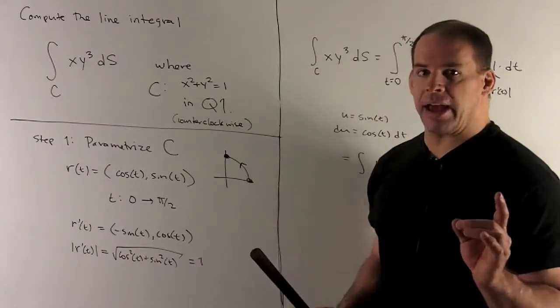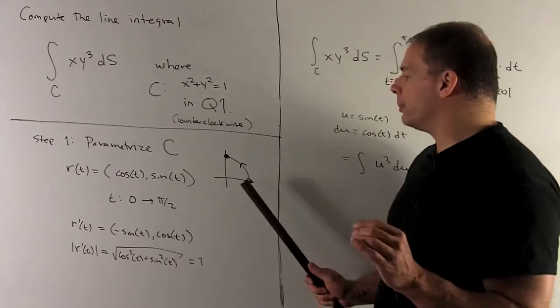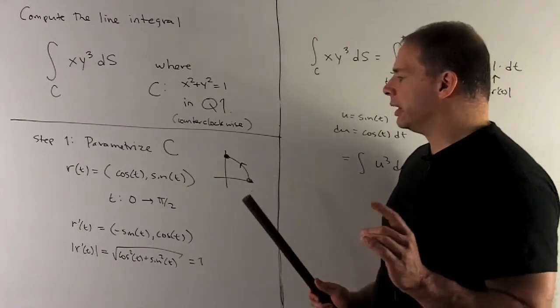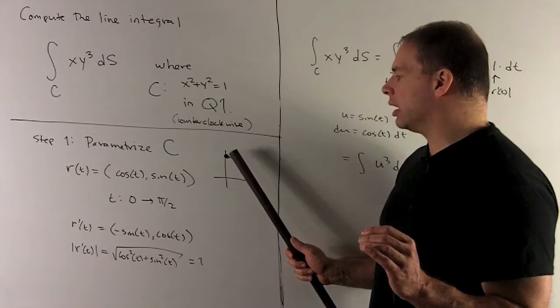What happens if I'm at t equals zero? That's going to give me one comma zero, which is here. If I put in pi halves, I'll get zero comma one, which is here.